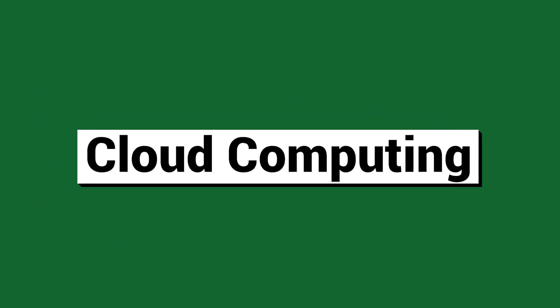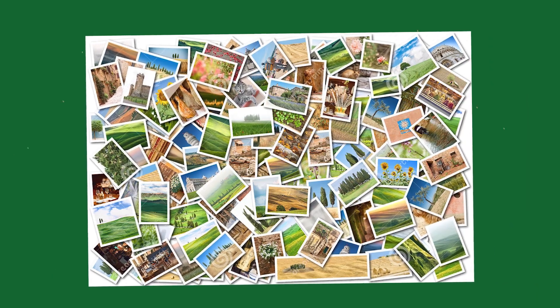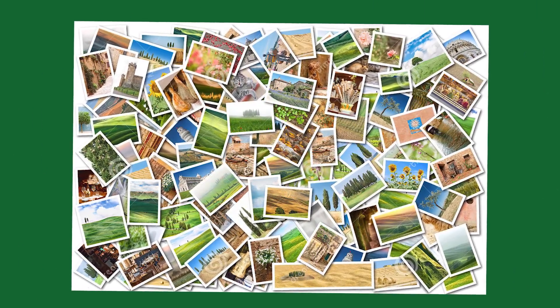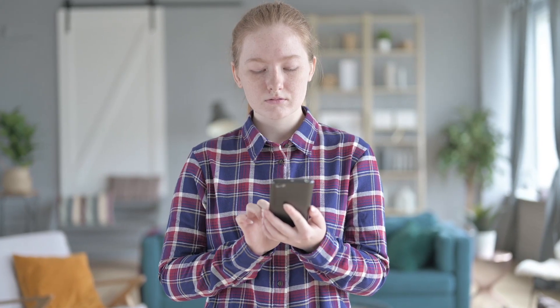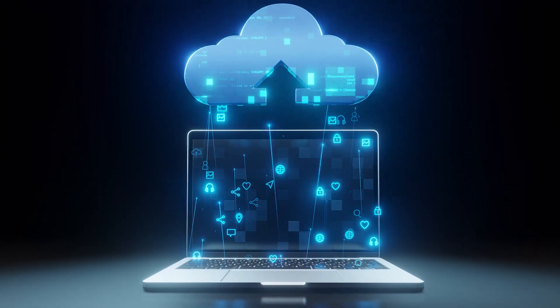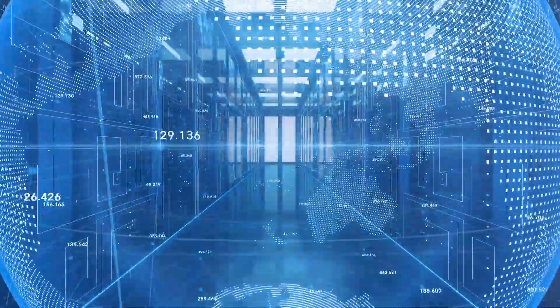Number seventeen: Cloud Computing. In its simplest form, Cloud Computing means using someone else's computer. If your phone doesn't have enough space to store all your photos, you can store them on the internet with Cloud Computing and access them from any device. It's also used by many companies to access supercomputers without having to spend millions of dollars.